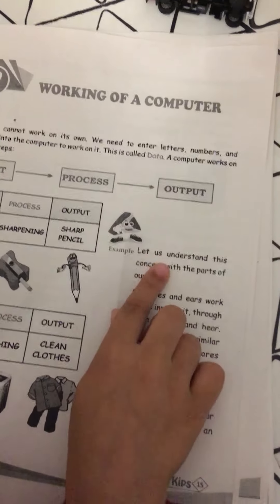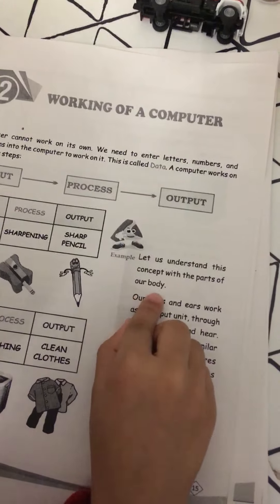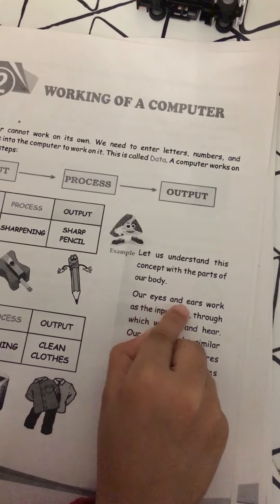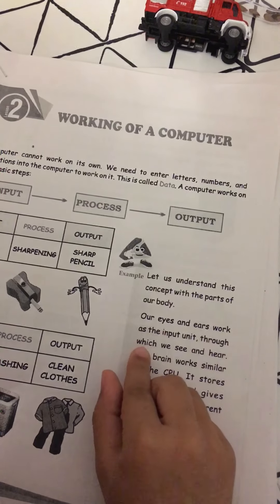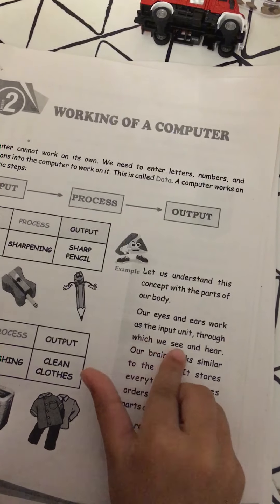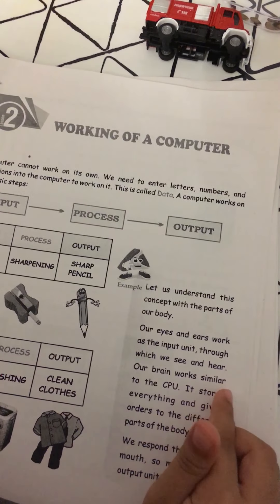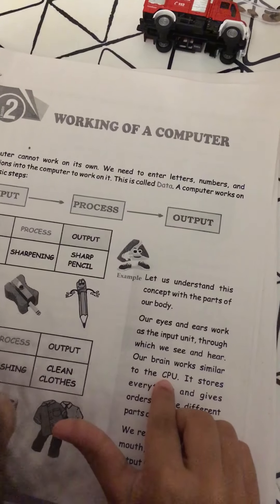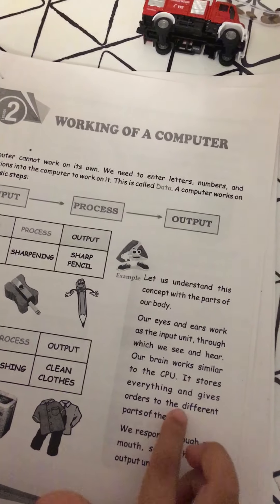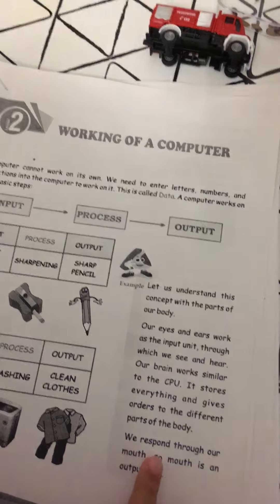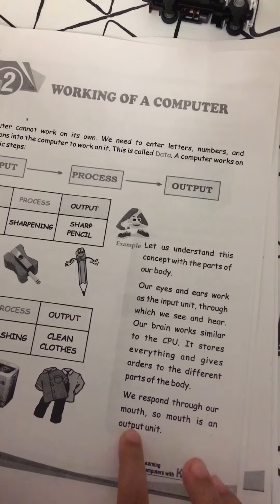For example, let us understand this concept with the parts of our body. Our eyes and ears work as the input unit through which we see and hear. Our brain works similar to the CPU. It stores everything and gives orders to the different parts of the body. We respond through our mouth, so mouth is an output unit.